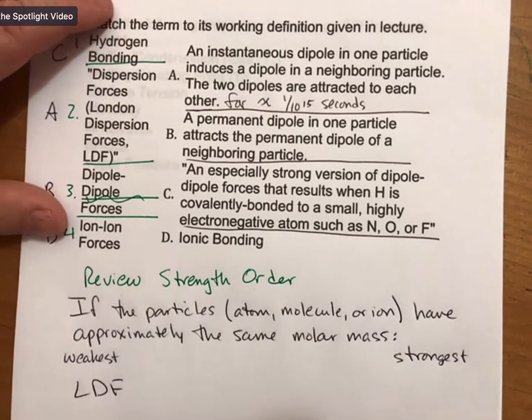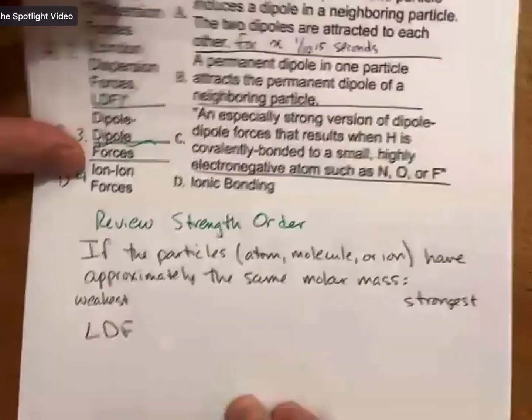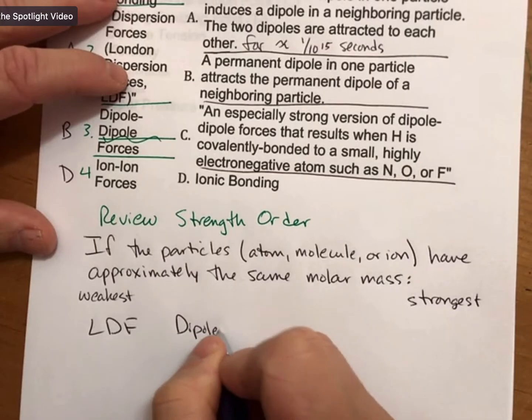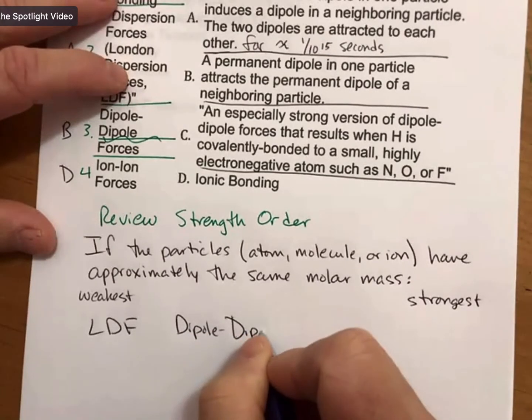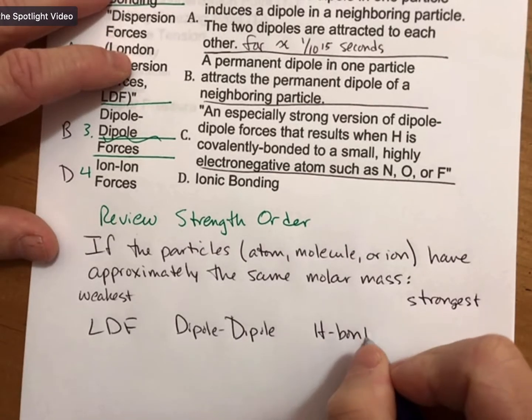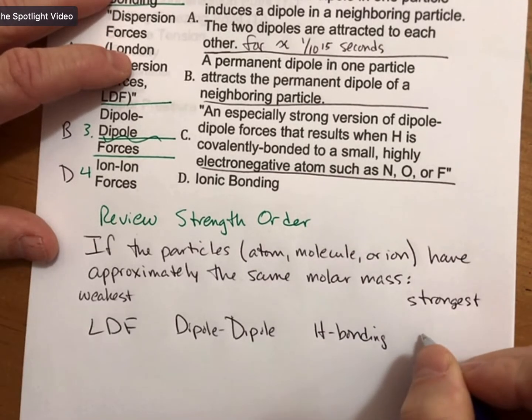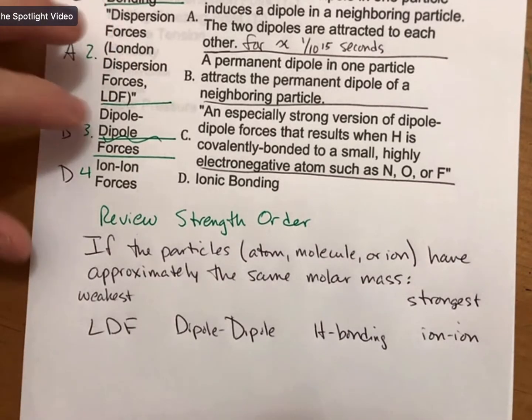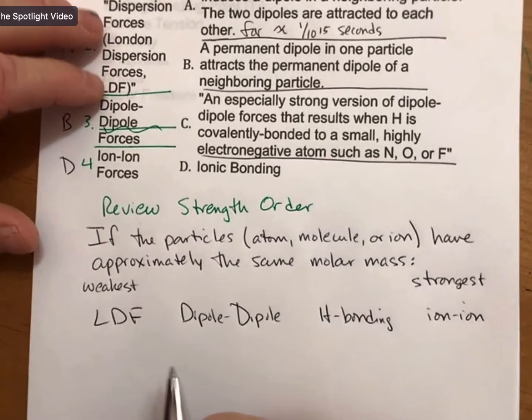If the particles have approximately the same molar mass, then the order of the intermolecular forces will be from weakest to strongest: first LDF, then dipole-dipole, then H-bonding, and then ion-ion.